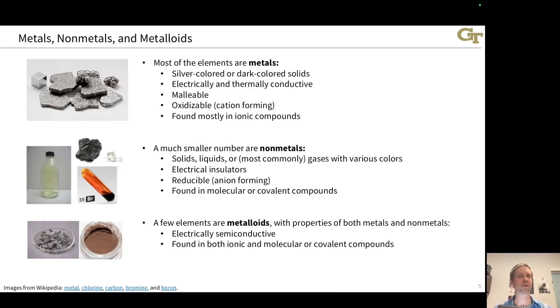A smaller number of elements in the top right of the periodic table are the non-metals. These are solids, liquids, or most commonly gases of various colors. They're electrically insulating. They're reducible. Frequently they form anions, and they're typically found in covalent bonds. The atoms bond covalently to form molecular or covalent compounds.